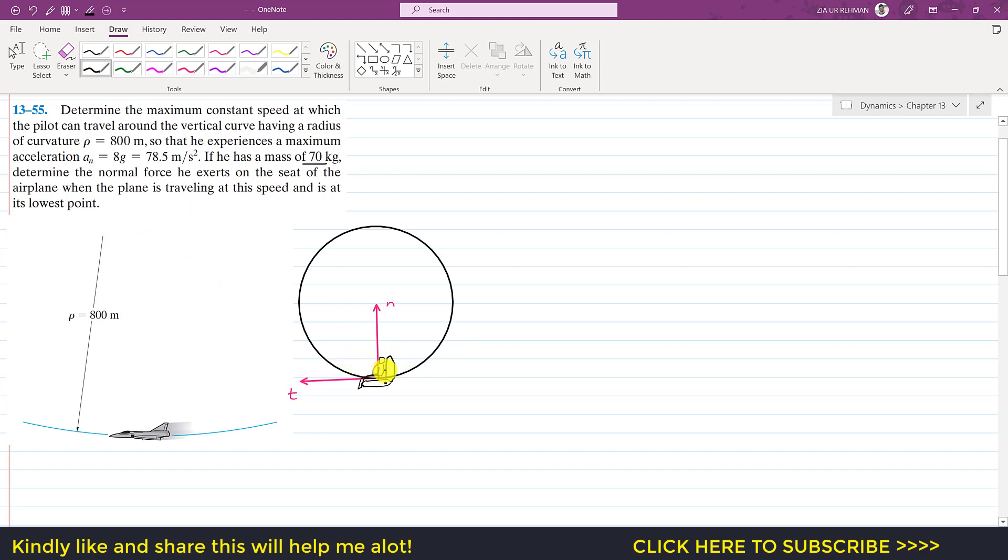So the pilot is sitting in the seat and he is at the lowest point. Let's say that this is our free body diagram. The normal axis direction will be towards the center of the path or the circle and the tangential axis will be tangent to this circle.